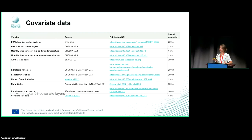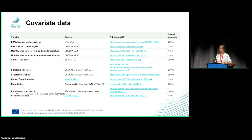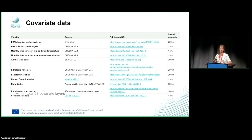The covariate data used in our model cannot include something like EVI, because we want to predict the potential FAPAR and not just what it currently is. So what we use is topographic data, climate data, data on the landform and the solar regime, some vegetation indicators, and specific human pressure variables: the human footprint index, night lights, population count, and cropland intensity.